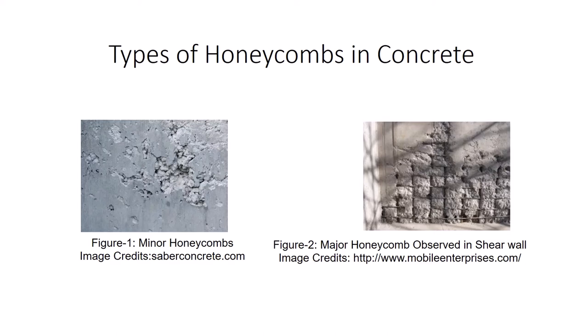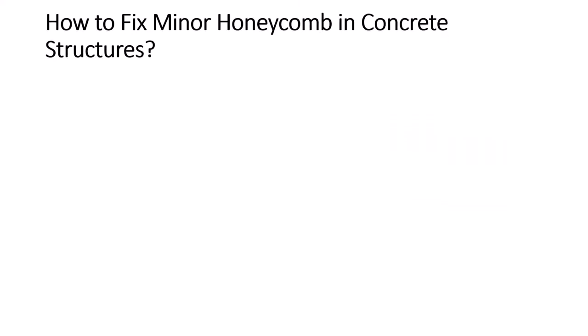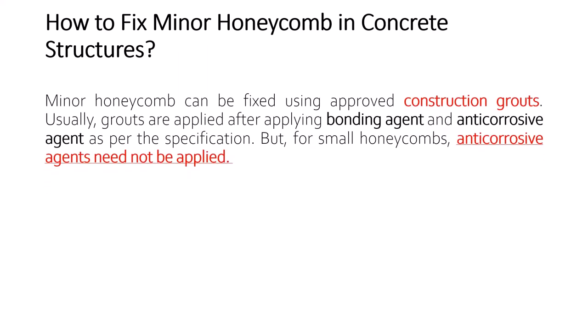Let's look into methods to fix minor honeycomb in concrete structures. Minor honeycomb can be fixed using approved construction grouts that are readily available in the market. Usually grouts are applied after applying a bonding agent and an anti-corrosive agent as per the specification given by the manufacturer. However, for small honeycombs, anti-corrosive agents need not be applied, as they can be fixed by simpler methods.